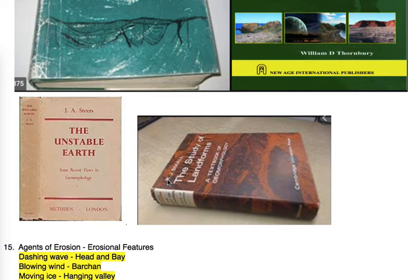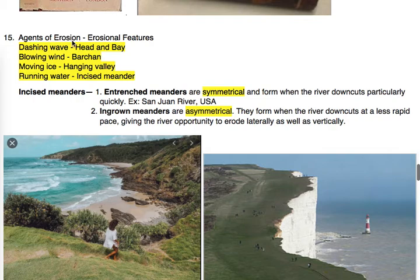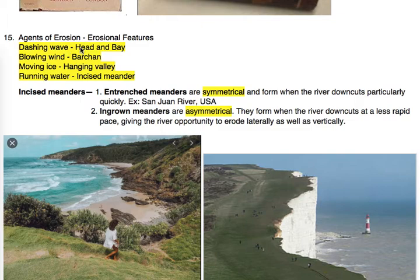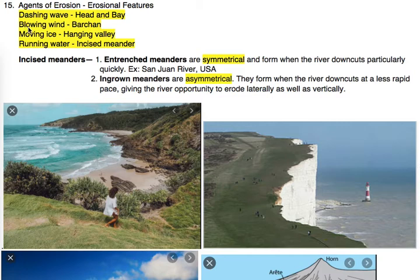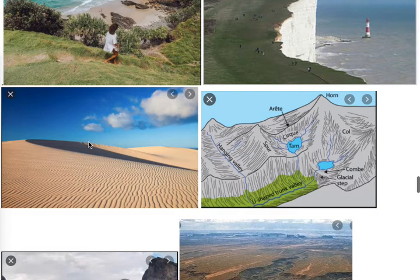Moving to the next topic: agents of erosion and erosional features. Dachain wave is related to headland and bay. The erosional features are caused by waves, so the Dachain wave is related to headland and bay. We can see images because pictographical images are easy to memorize and our brain recognizes them easily. The second: blowing wind is related to barchans. Wind creates barchans, which are crescent-shaped dunes made by blowing winds.